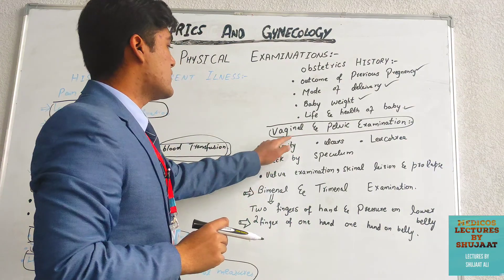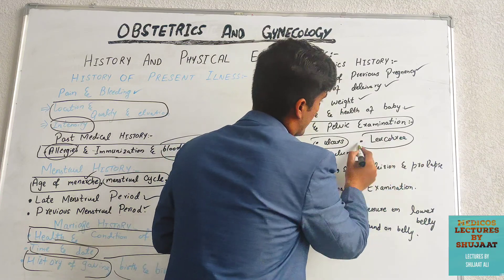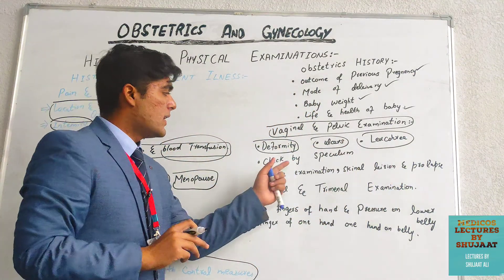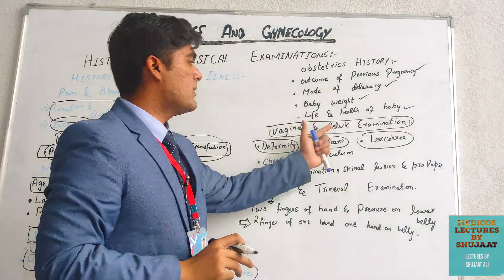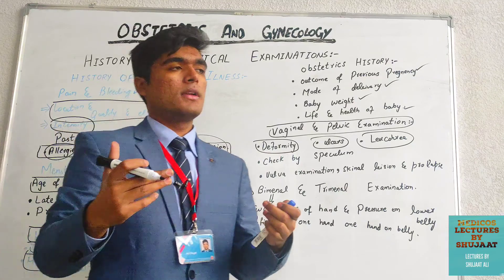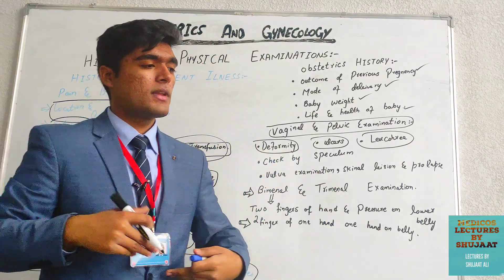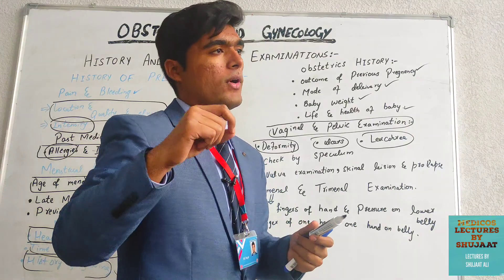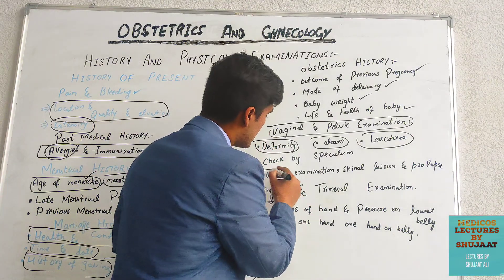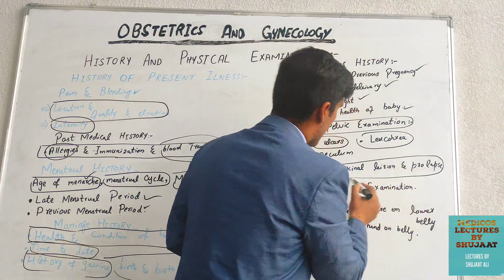In vaginal examination, we check for deformity, ulcers, or leucorrhea — which is basically a discharge of white fluid from the vagina. We also perform pelvic examination by speculum, which is an instrument used to examine the pelvis for any anomaly or distortion. We also check for skin lesions or prolapse.